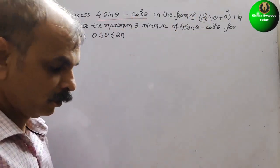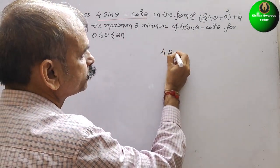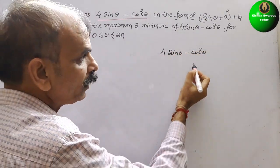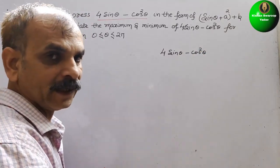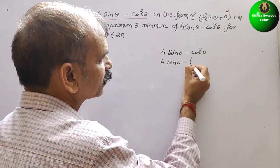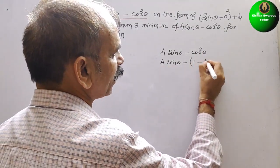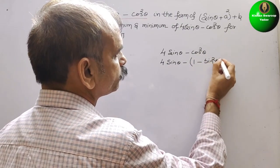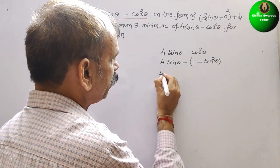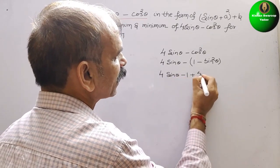We have to write in the form of sin — that means we don't want cos. So we have 4 sin theta minus cos square theta. We will convert cos square theta into sin using the identity: cos square theta equals 1 minus sin square theta. So it becomes 4 sin theta minus (1 minus sin square theta). Opening the bracket, it will be 4 sin theta minus 1 plus sin square theta.